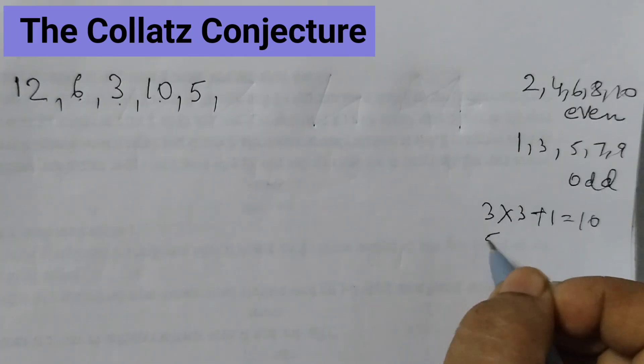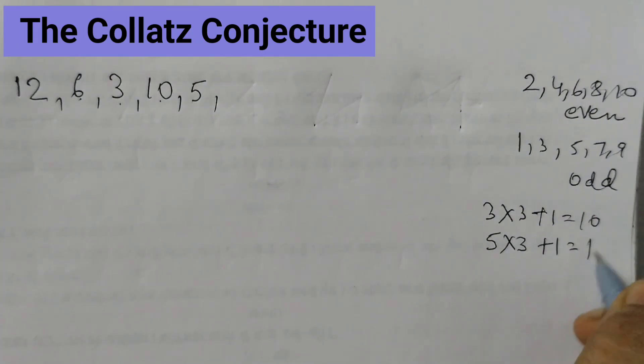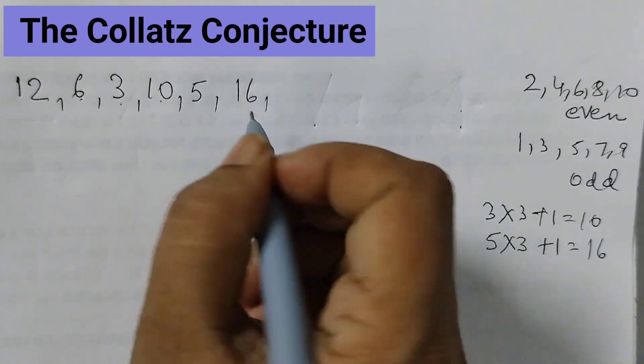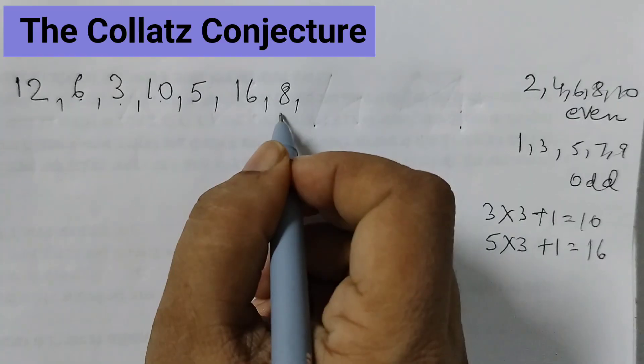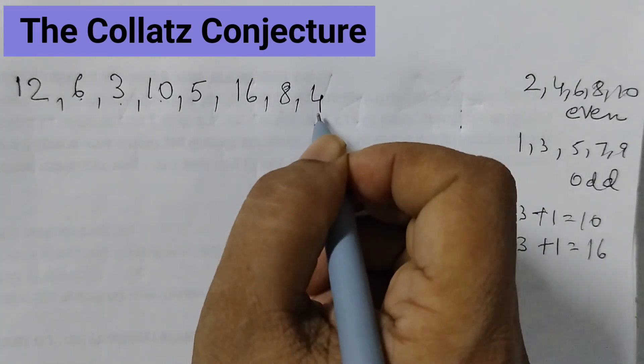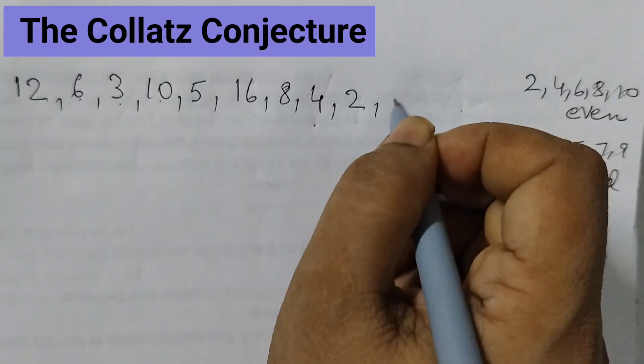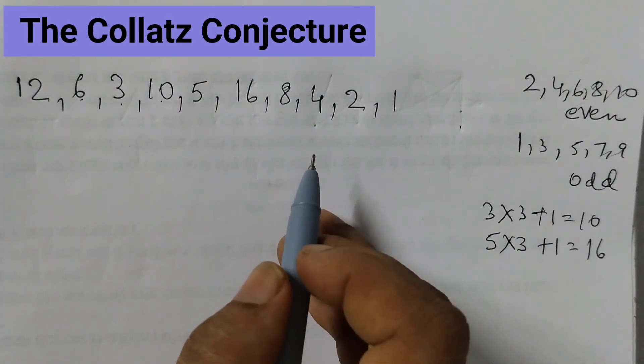5 is an odd number, so multiply by 3 and add 1. 15 plus 1, 16. 16 is an even number, take half of this. Half of 16 is 8. 8 is an even number, half is 4. 4 even number, half would be 2. 2 is an even number, that would be 1. So this is the pattern that we will get.